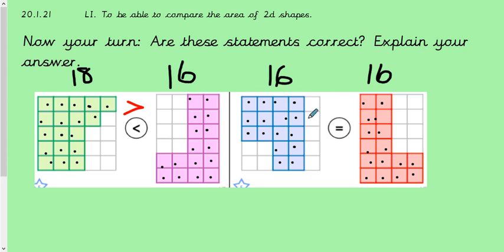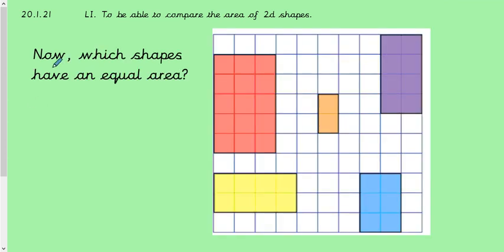And let's look at this one. So the blue shape has an area of 16 squares and the red shape also has an area of 16 squares. Therefore, they are the same and the equal sign is correct. OK, so that one was correct. It was just this one that needed correcting.